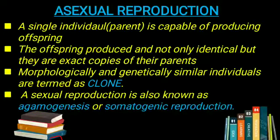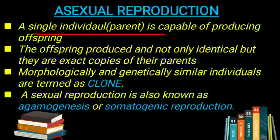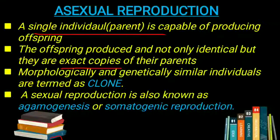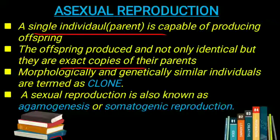What is Asexual Reproduction? In asexual reproduction, a single parent is capable of producing offspring — only a single parent is involved. The offspring produced are not only identical but are exact copies of their parents. The offspring produced in asexual reproduction are morphologically and genetically similar to their parents, meaning the external appearance and genes are exactly the same as the parents.